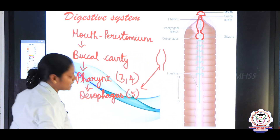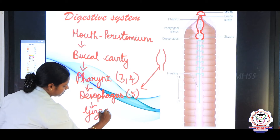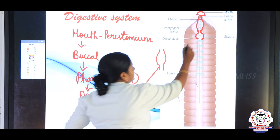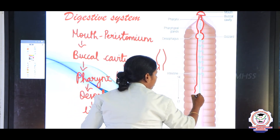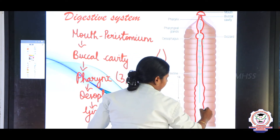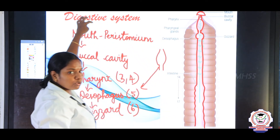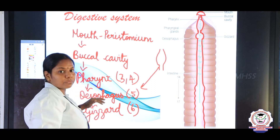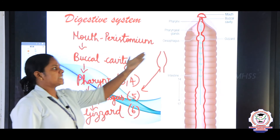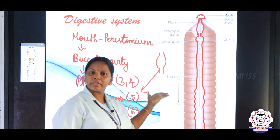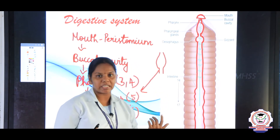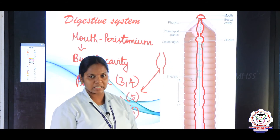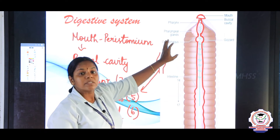The esophagus is present in the 5th segment and opens into the gizzard. The gizzard is located in the 6th segment. From the 7th segment onwards, the intestine extends till the last segment. The food enters the mouth, then the pharynx, esophagus, gizzard, and intestine. The function of the gizzard is grinding the soil particles, as the earthworm consumes dead and decaying plant material along with soil.